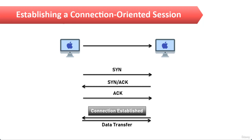To sum up the steps in the connection-oriented process, it is known as a three-way handshake. You can see the first arrow — that is the SYN arrow — the second arrow is the SYN-ACK arrow, and the last handshake is the ACK. I will now explain what this handshake means.